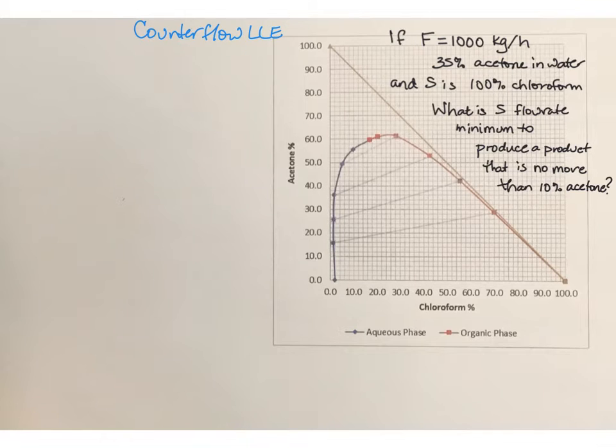To get started we will plot the given information. My feed is 35 percent acetone, so there is my feed. The solvent will be 100 percent chloroform and I want my raffinate to be 10 percent acetone. That will be on this equilibrium curve where acetone is 10 percent. This is going to be the highest quantity of acetone allowed in the product.